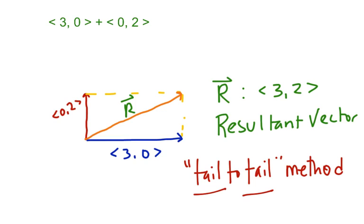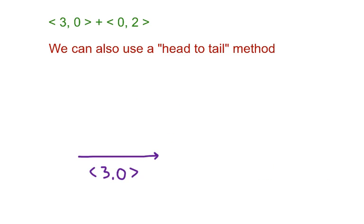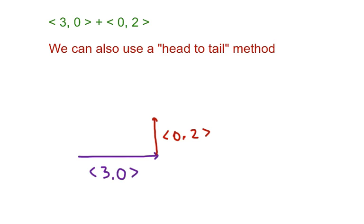There's a method I like better, and it's called the head-to-tail method. We have the same two vectors. If we do head-to-tail, we take our first vector (3, 0) and then, instead of putting the second vector so that their tails match up, at the head of the first vector we start the tail of the second one. Because with vectors it doesn't matter where you start, you can really do head-to-tail or tail-to-tail.